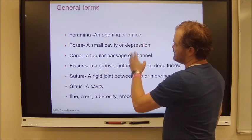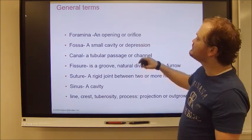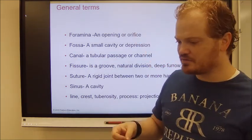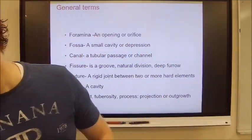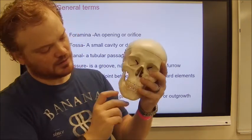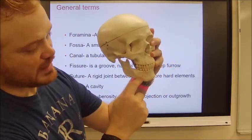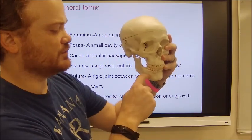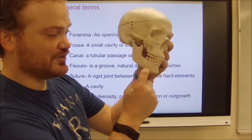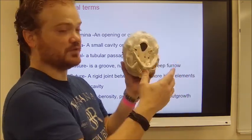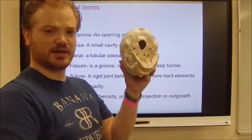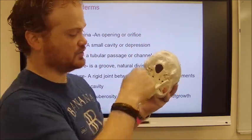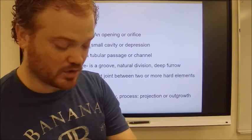Before we do anything else, we need to talk about some general terms. A foramen, for example — foramina are small openings or orifices. If you look at a skull, you can see a small hole in the jaw; that's a mental foramen. On the bottom of the skull there's a big opening called the foramen magnum — magnum meaning large.